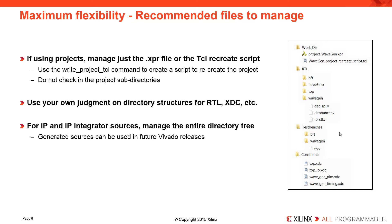Use your own judgment on the directory structure for the RTL, for your constraints, etc. And for IP and IP integrator sources, manage the entire directory tree. Generated sources can be used in a future release of Vovato. So if you check in all the files in the IP or the block design directory, then in a future release of Vovato, even if that IP has been changed, you have everything you need in order to maintain that and you're not forced to upgrade the IP.